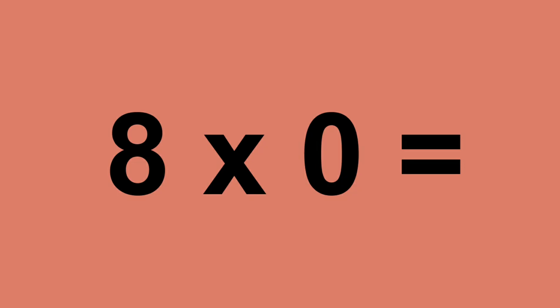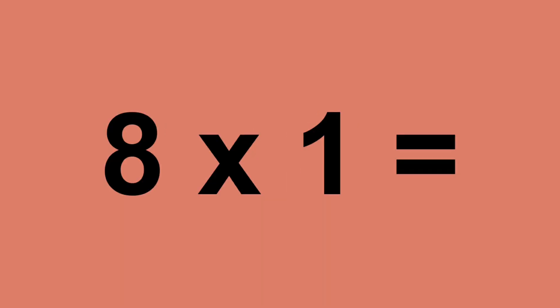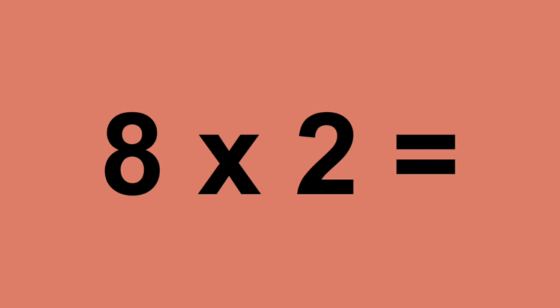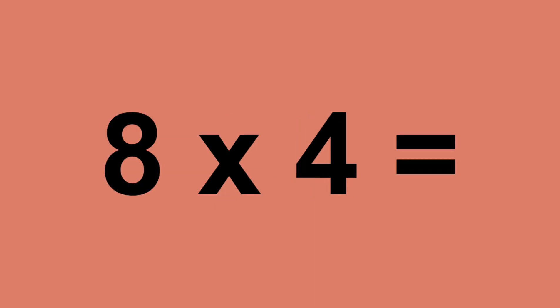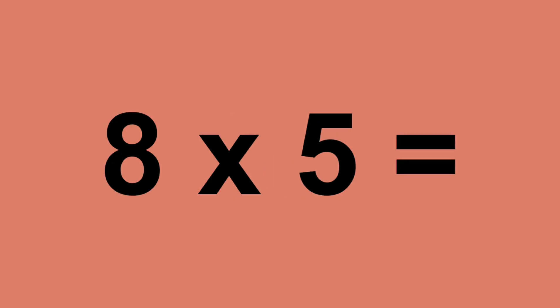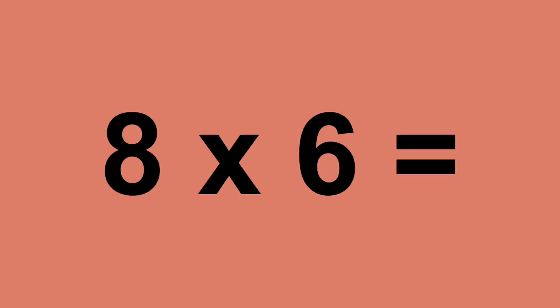8 times 0 equals 0. 8 times 1 equals 8. 8 times 2 equals 16. 8 times 3 equals 24. 8 times 4 equals 32. 8 times 5 equals 40. 8 times 6 equals 48.